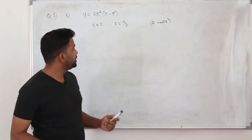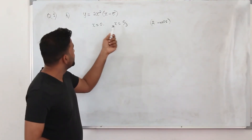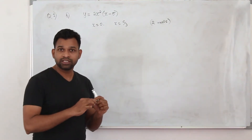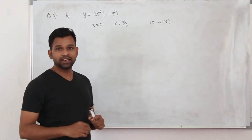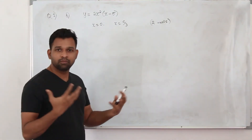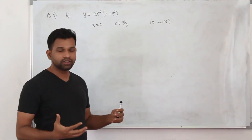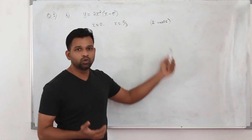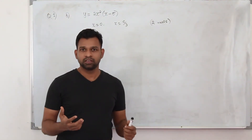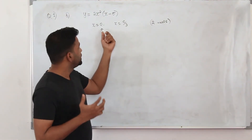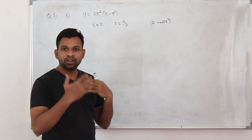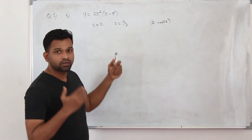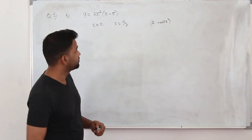In part B, they want you to find the values of x for which the function is increasing. There are several methods to find this, but part B has only 2 marks, so you need the easiest approach.